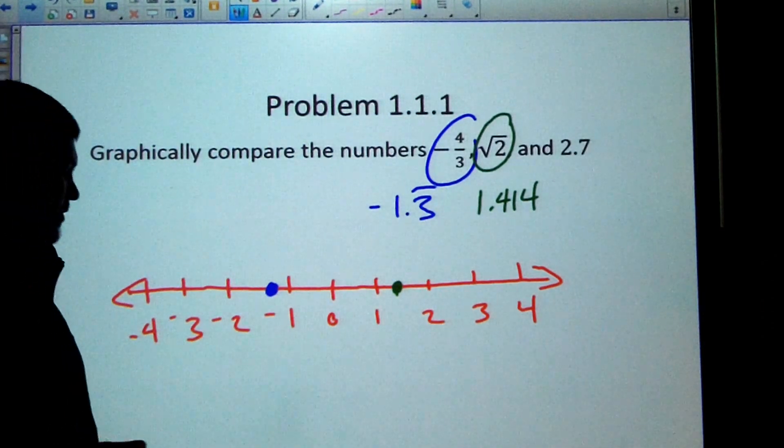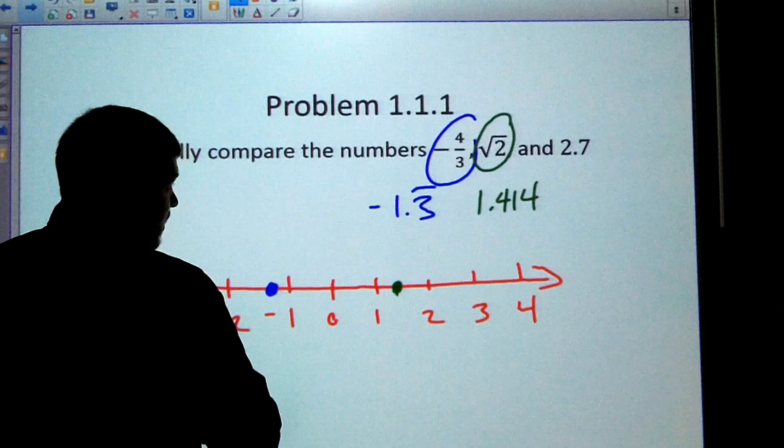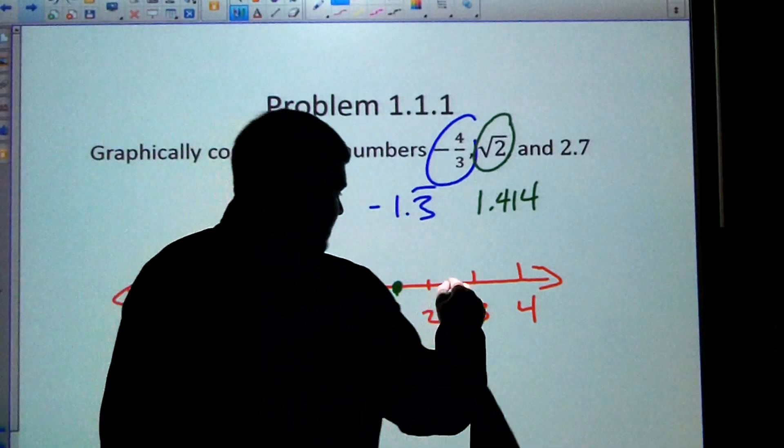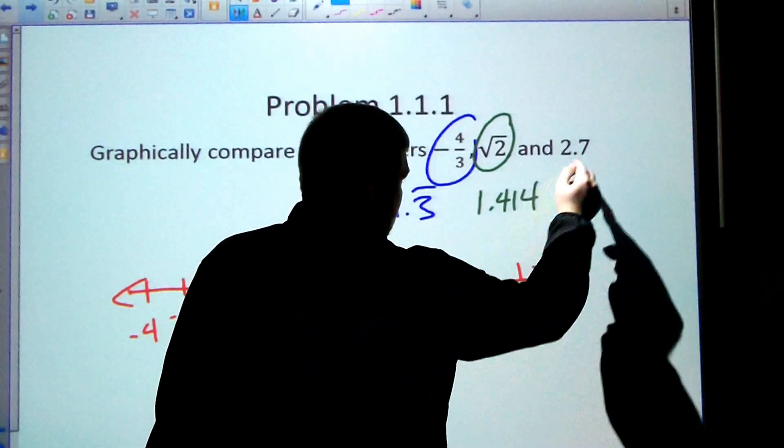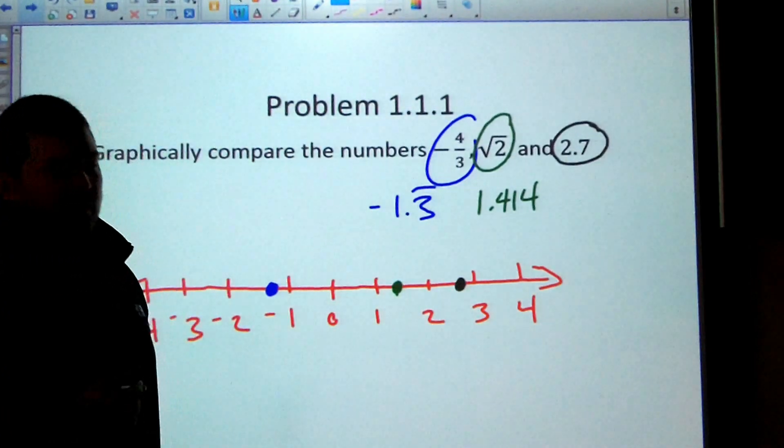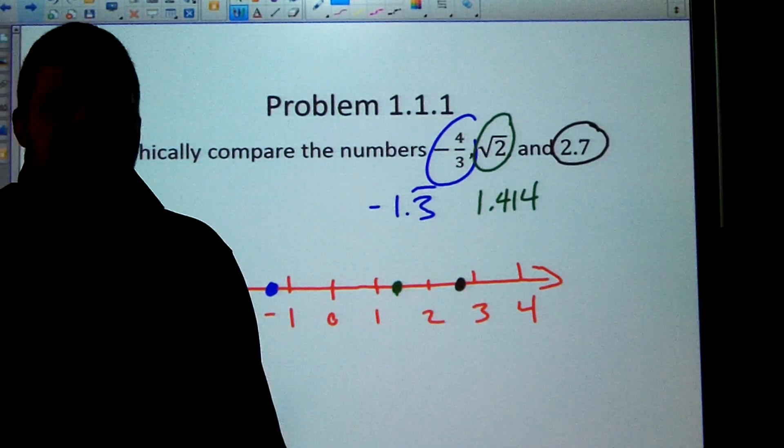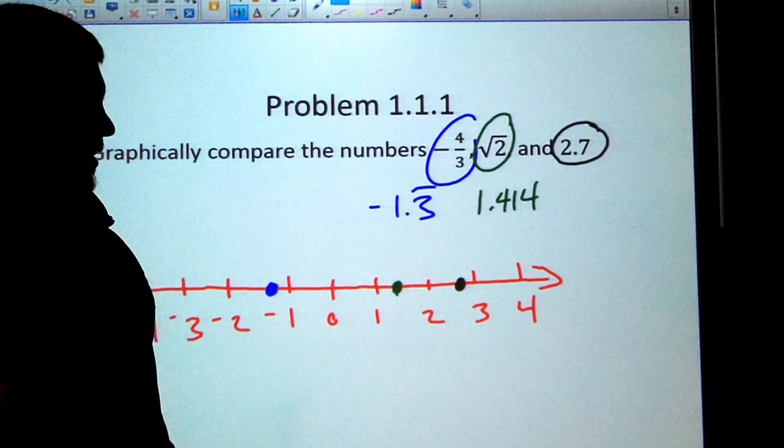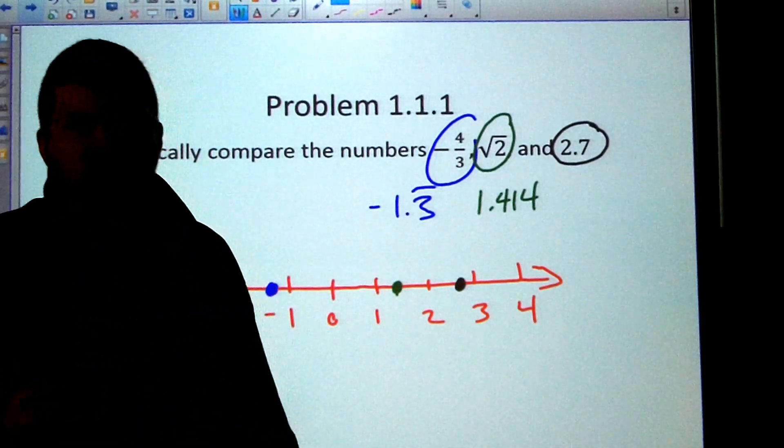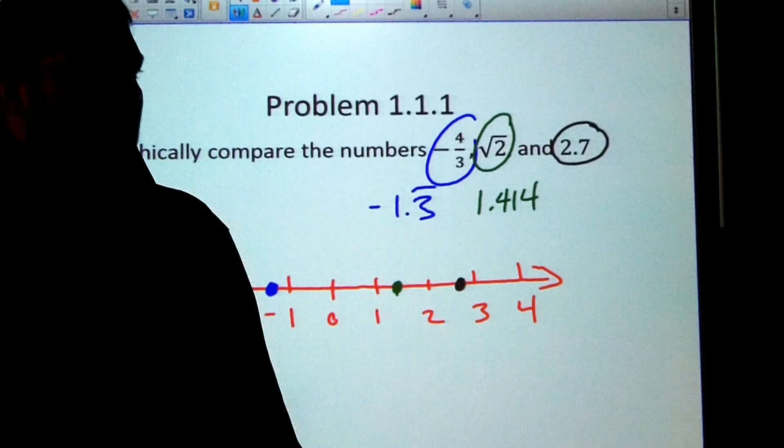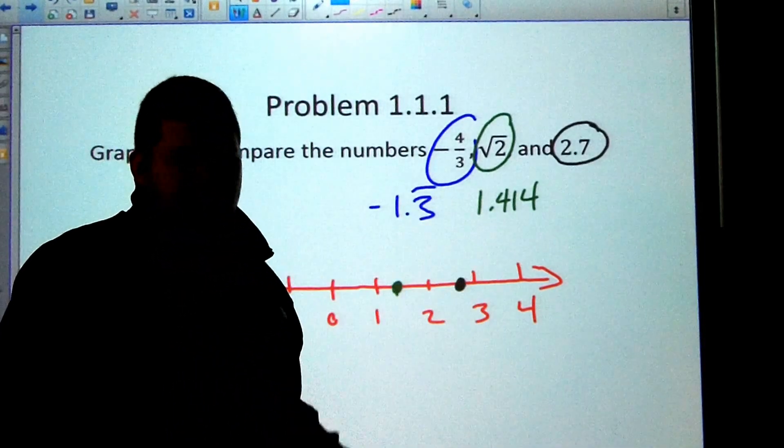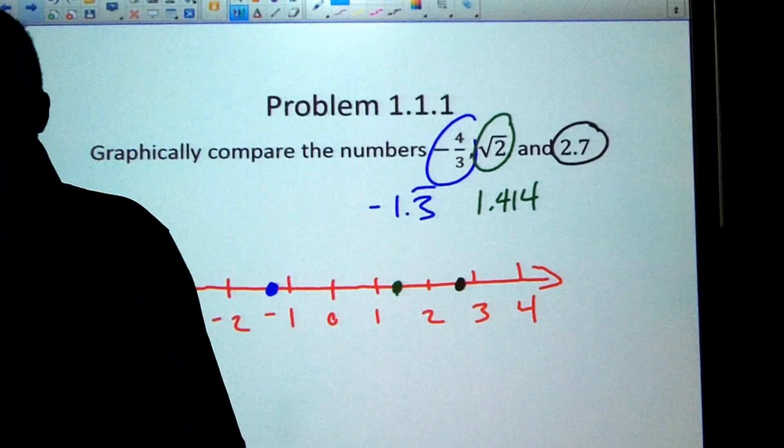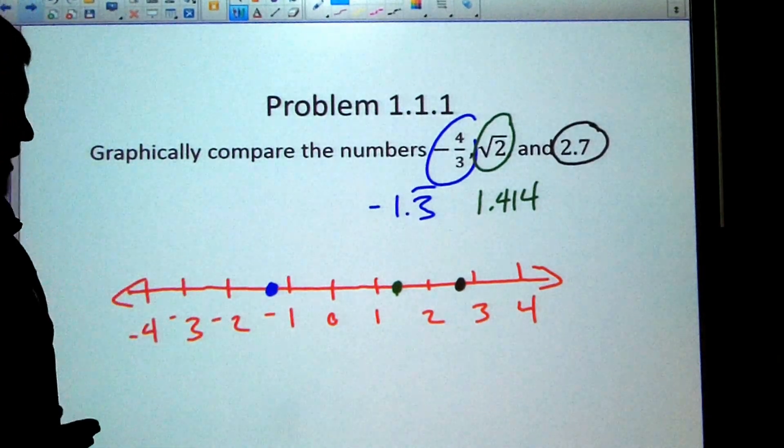And then finally, 2.7. That's pretty easy to put on the number line because it's already a decimal format. And that's somewhere about right here. So we have all three numbers listed. Now again, if you can convert those to decimals, that's great. Some of them might be nice. You can do it by hand, like negative four thirds. Some of them like square root of two, unless you have that decimal memorized, you might need to use a calculator.